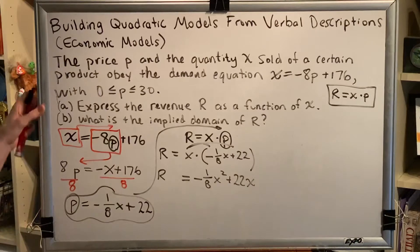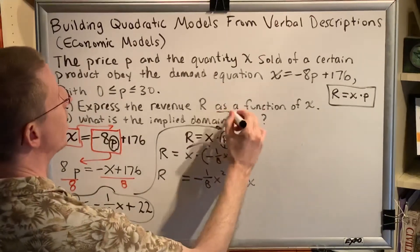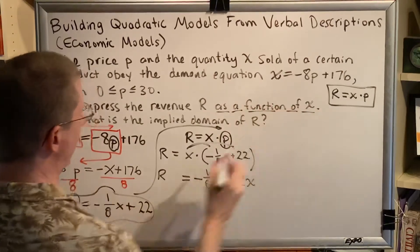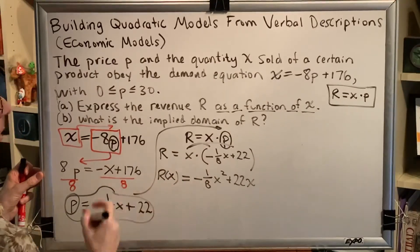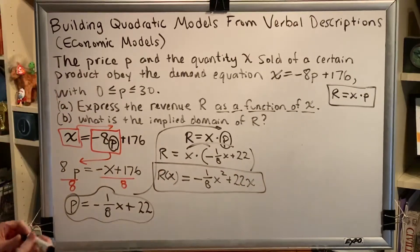And because part a of this problem says that we should express R as a function of x, instead of writing just R =, we're going to write R(x) =. This is the answer to part a of this problem.